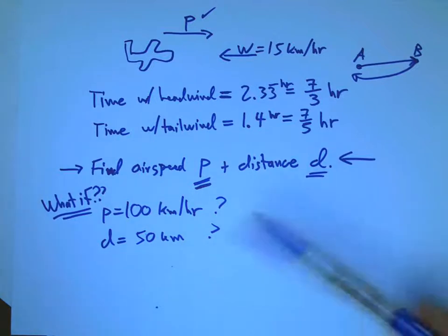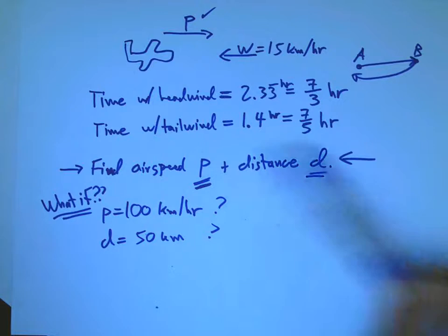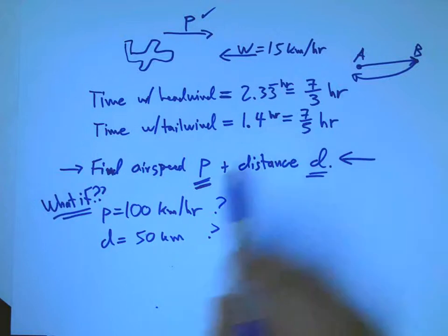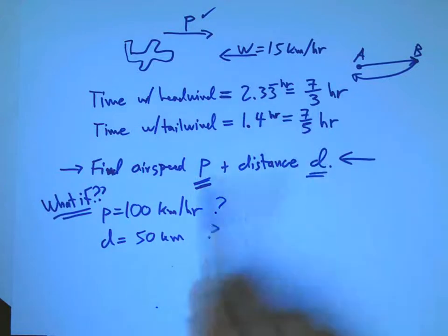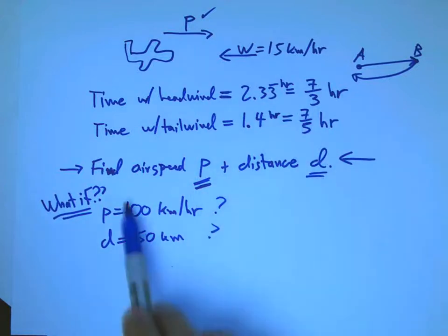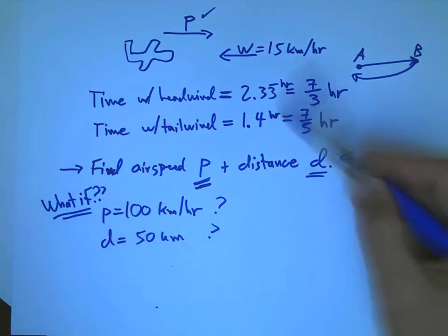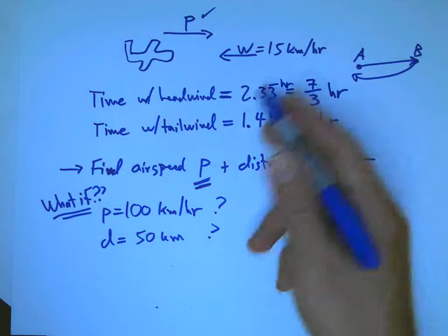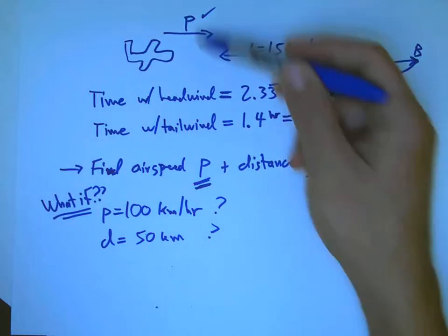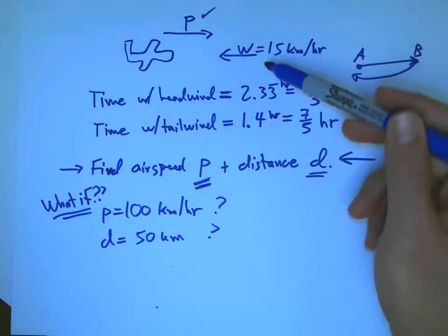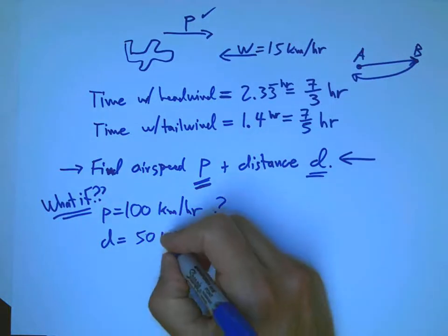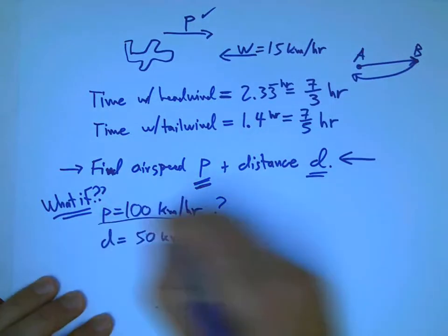And in particular, I'd like to match those up, and say, would that actually give me, in this situation, with a 15 kilometer headwind, and 100 kilometers per hour, and going 50 kilometers, would that actually end up being 7 thirds of an hour, or not? Would it end up with the tailwind being 7 fifths of an hour? And just checking that with explicit numbers, you're going to be forced to write down, essentially, the same algebra that we're going to use in a minute with the letters, and then solve in a more complicated way.